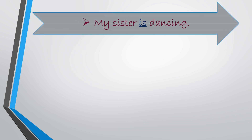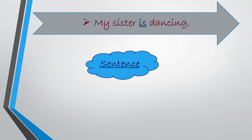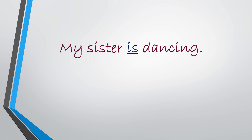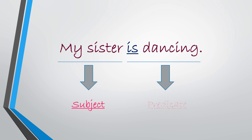Students, now read this sentence: 'My sister is dancing.' Every sentence has two parts. One is the subject, which tells us who or what the sentence is about. And the other is the predicate, which tells us what the subject is doing. In this sentence, 'my sister' is the subject, and 'is dancing' is the predicate — it tells us what the subject is doing.